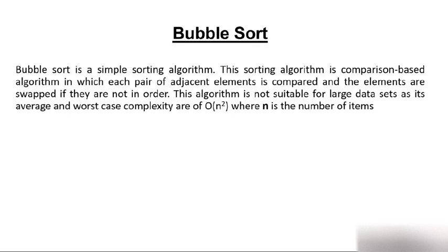Bubble sort is a simple sorting algorithm. It is a comparison-based algorithm in which each pair of adjacent elements is compared and the elements are swapped if they are not in order. What actually happens is that two adjacent elements are compared, and if the element at the first position is greater than the element at the second position, we swap them because they are not in order.